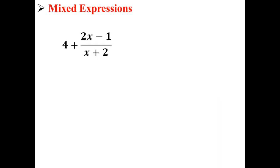Here we have our original mixed expression. To change it to a rational expression, we need to find the least common multiple, or LCM. Here we have 4 over 1 and 2x minus 1 over x plus 2. So our least common multiple is x plus 2.